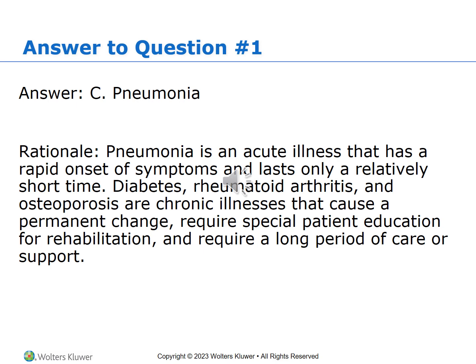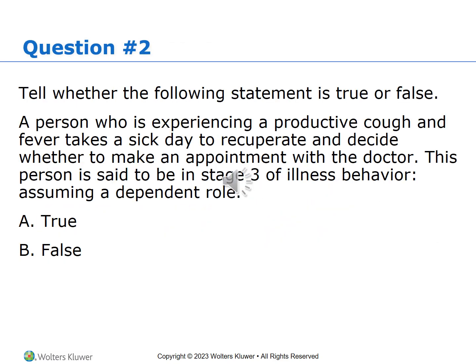Diabetes is a chronic disease with periods of exacerbation and remission, as are rheumatoid arthritis and osteoporosis — all diseases that will progressively become worse over time, especially if not properly managed. Question number two — true or false: a person experiencing a cough and a fever takes a sick day to recuperate and decides to make an appointment with the doctor. This person is said to be in Stage 3 of illness behavior, assuming a dependent role. True or false?